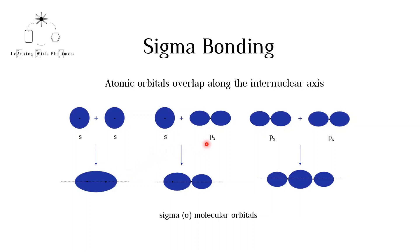Similarly, an s and a px orbital, or two px orbitals, can combine in this manner to form sigma molecular orbitals. Note that px orbitals lie along the internuclear axis. All single covalent bonds are actually sigma bonds.